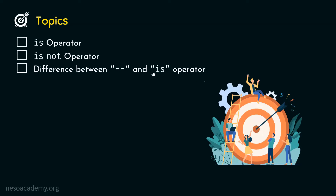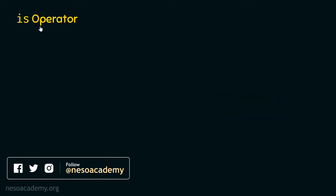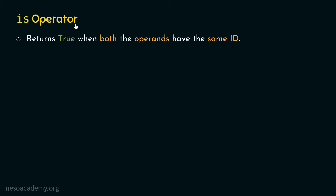Let's start from the first topic — the `is` operator. The `is` operator returns true when both operands have the same ID. If the operands have the same ID, then `is` returns true; otherwise, it returns false.